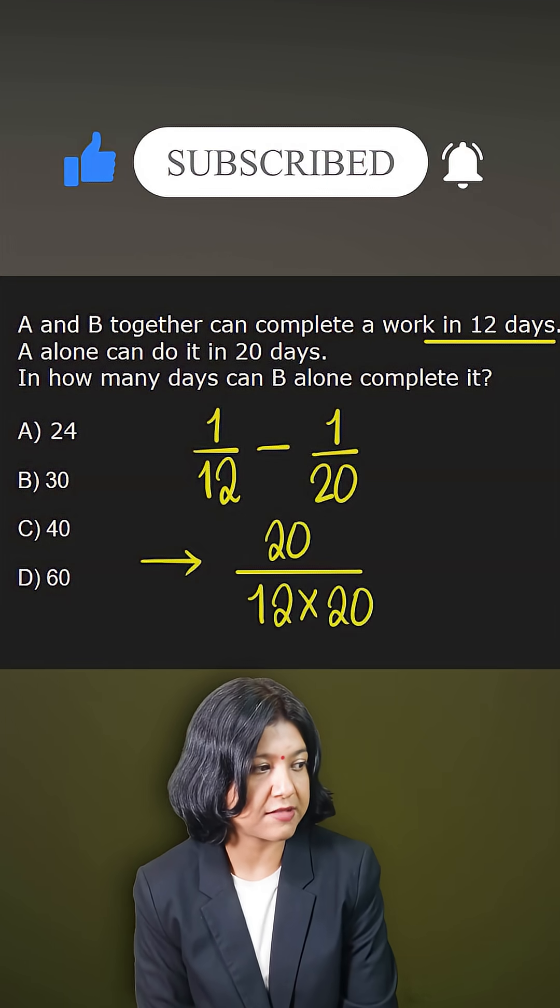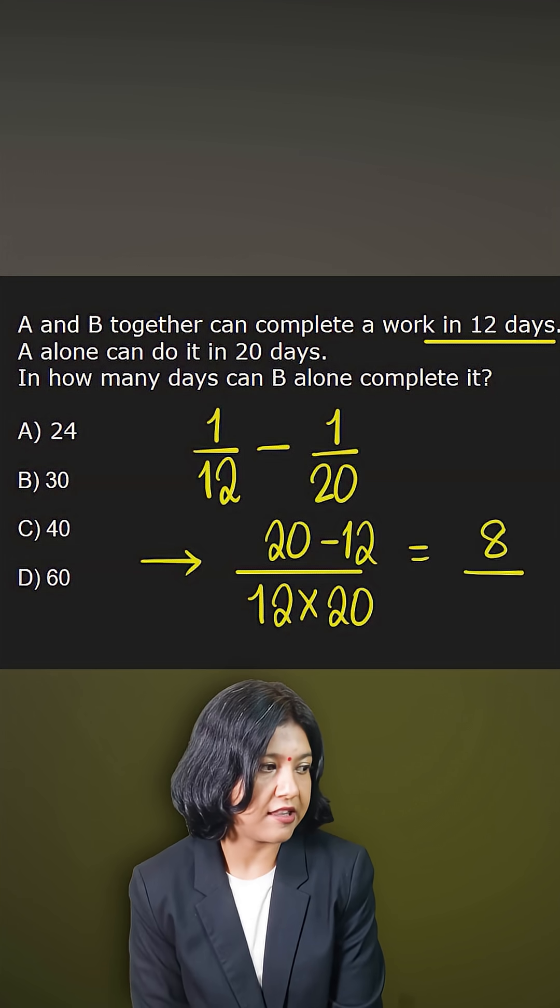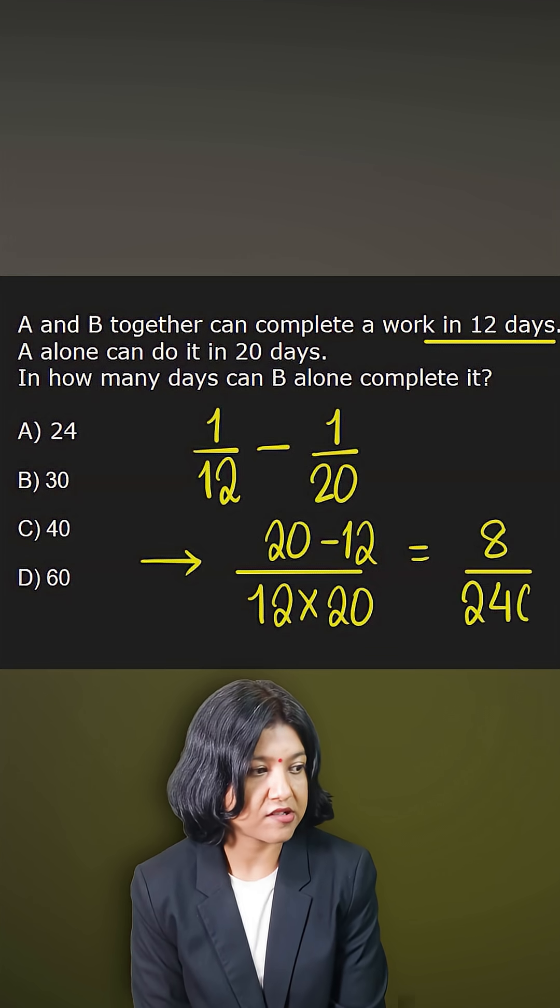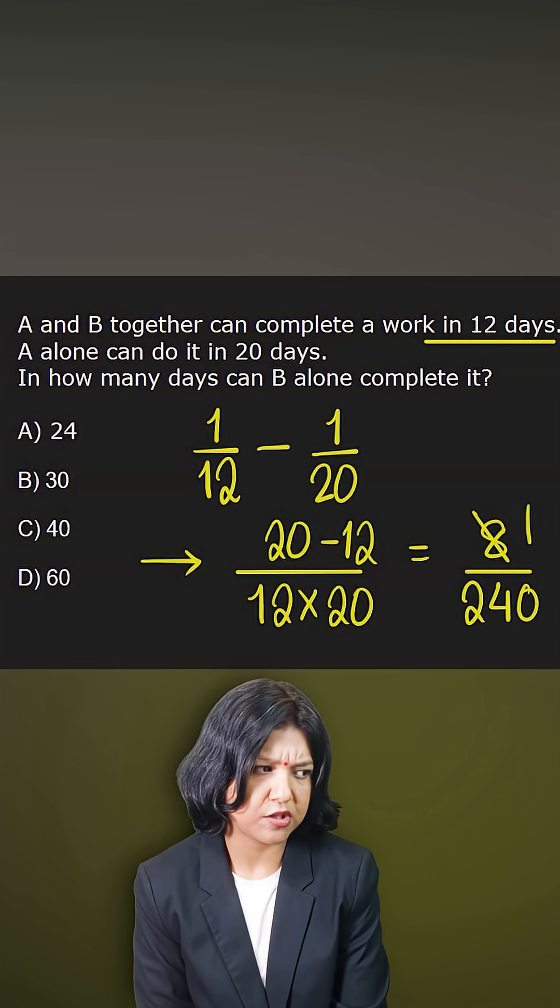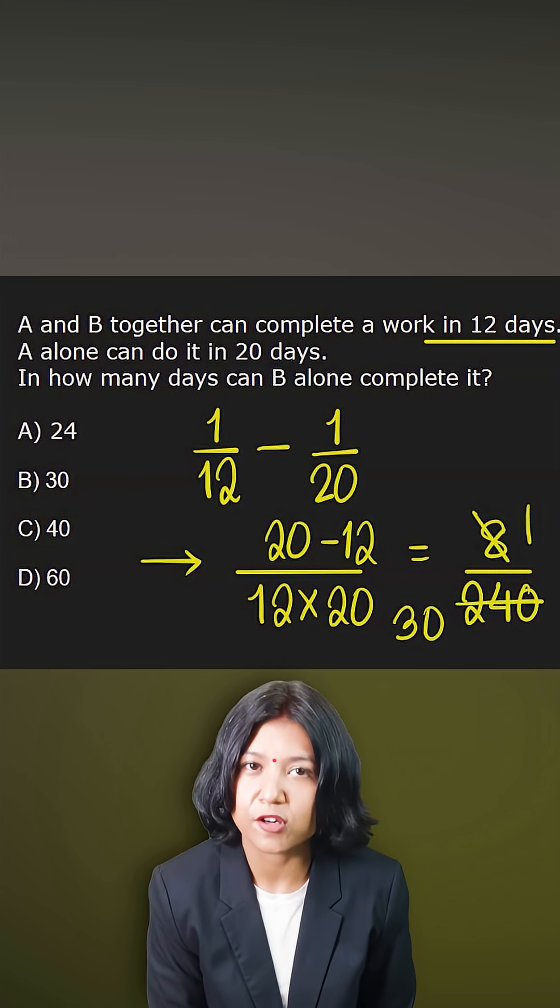So difference is 20 minus 12 and the product is 12 times 20. 20 minus 12 is just 8 and then 20 times 12, 12 times 2 is 24. So you just get the answer in no time: 1 by 30. Note that 1 by 30 represents the one day work of B.